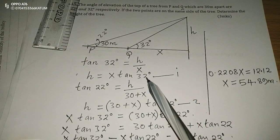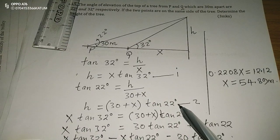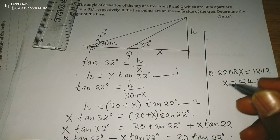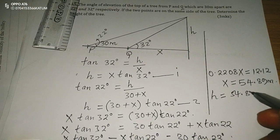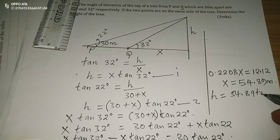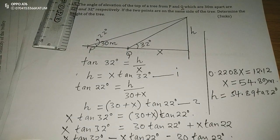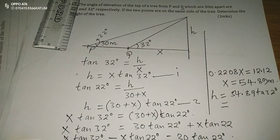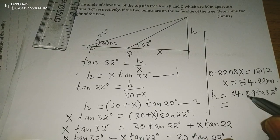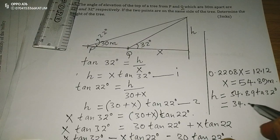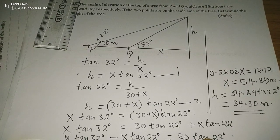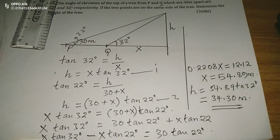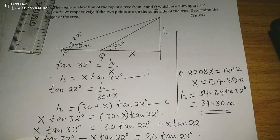The height of the tree will be given by either expression 1 or 2. So H equals X times tan(32), which is 54.89 multiplied by tan(32). This gives exactly 34.30 meters, to four significant figures. This is the height of the tree. Thank you for following. Subscribe and share. Thank you.